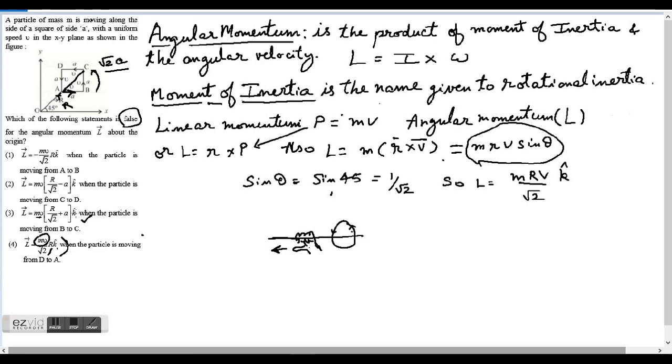And then upon root 2 comes from sine 45, which is 1 upon root 2, and then the vector k. So this option also is correct. Vector k I can use the right hand rule to curl my fingers in the direction of motion of this particle, and that means that the thumb will point upward in the direction of z axis. So unit vector k is correct in both cases.